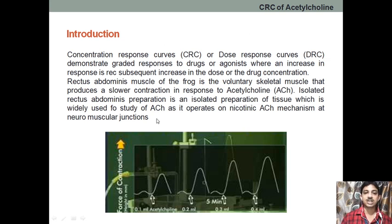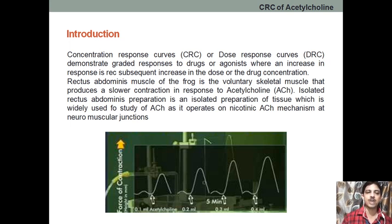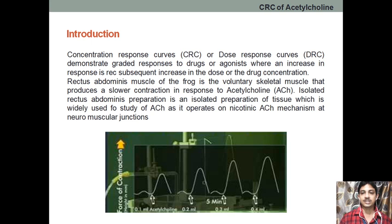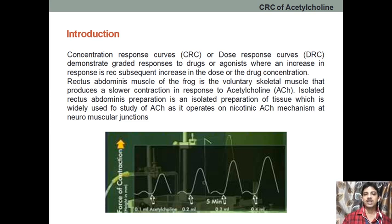This concentration response curve is very essential for bioassay — that is, to find the unknown concentration of a particular drug. For example, if we are giving a standard acetylcholine and a test drug which is also acetylcholine, we perform the bioassay to find what concentration is available in the unknown sample. Whenever we go for bioassay, we need to perform the CRC first — that is very important.